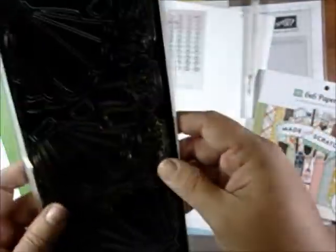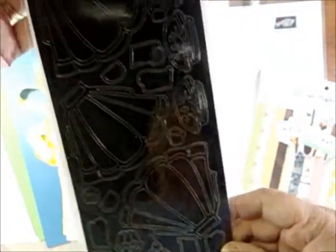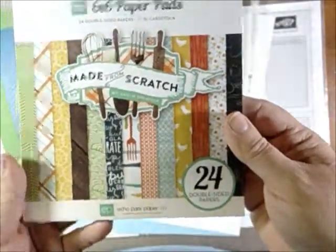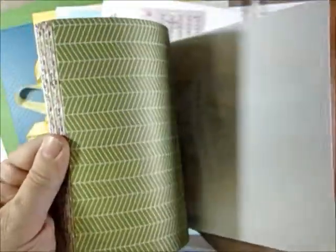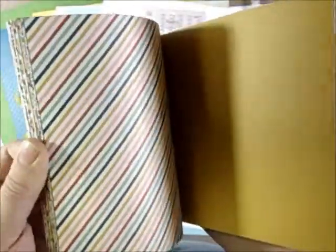Also included in the kit are these outline stickers from Crazy Creations. I'm anxious to look at these and get them out of there. Six by six paper pad from Echo Park called Made From Scratch. You get two sheets of each pattern.